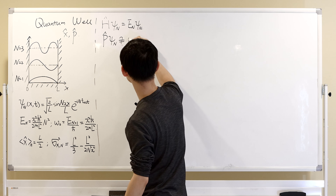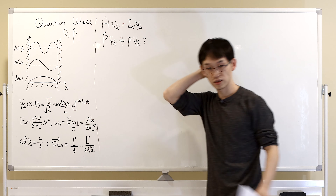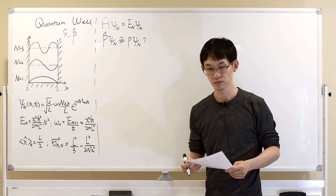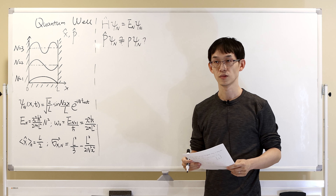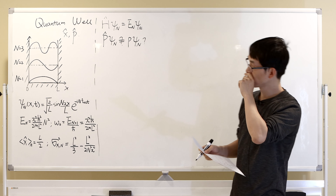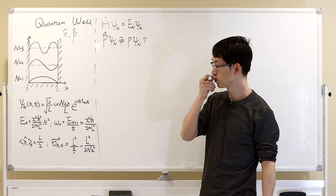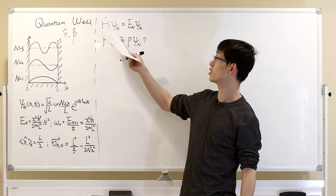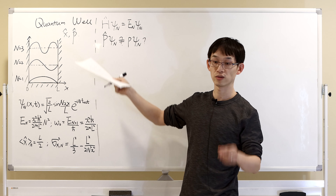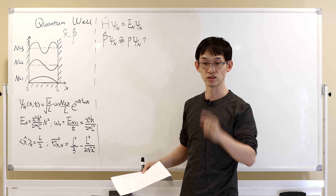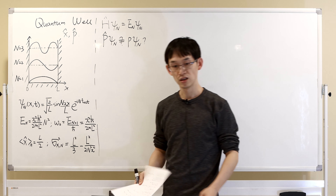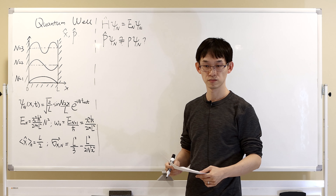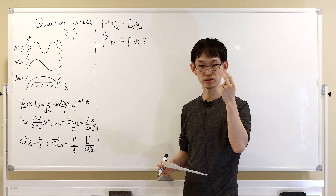Let's say the momentum is this. For this state, because we know it's the eigenstate of the Hamiltonian, when you measure it, it has a definite energy — one energy value. Does this energy correspond to one momentum value?